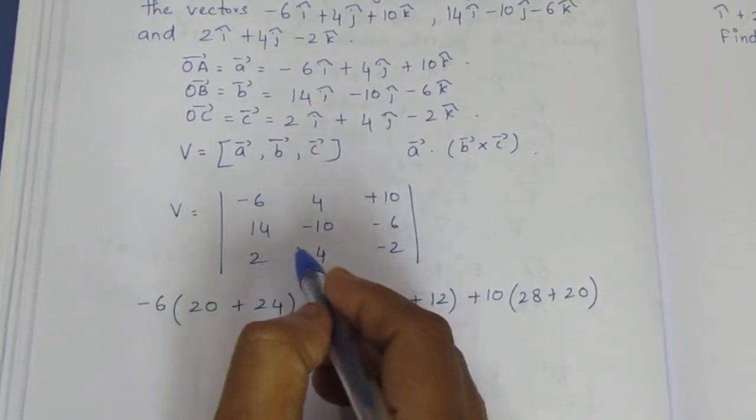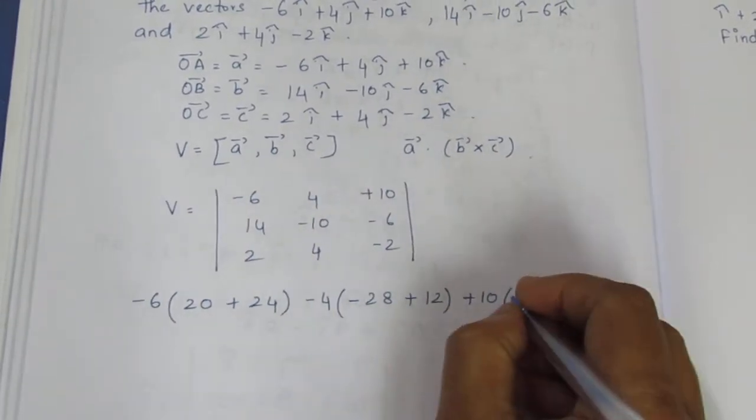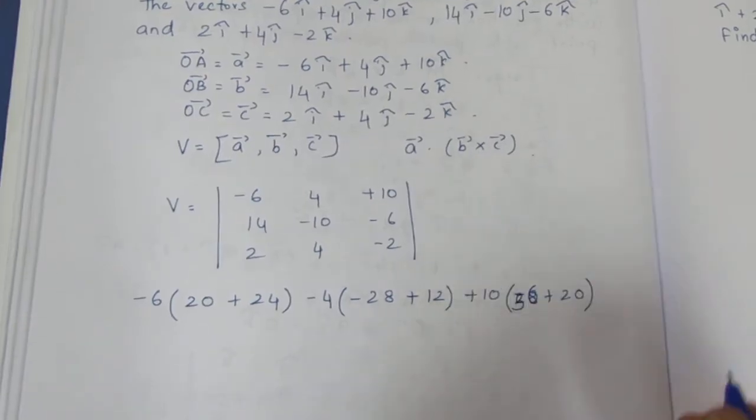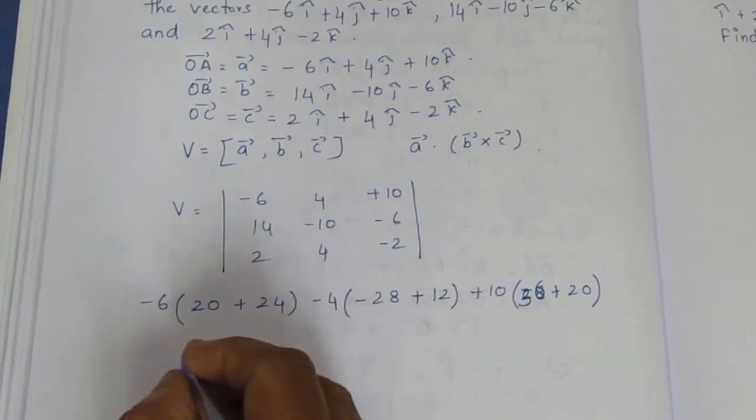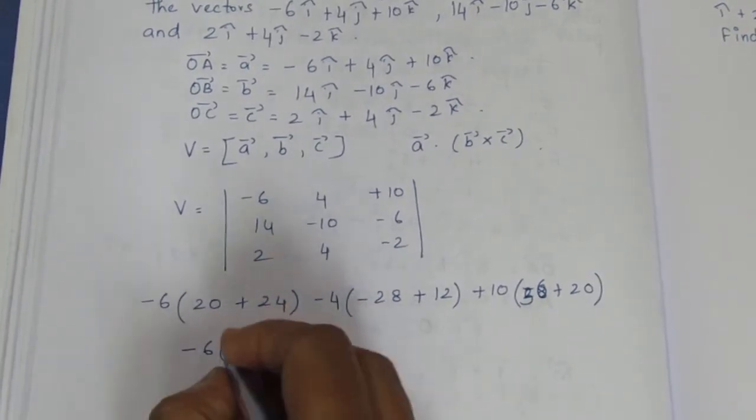Now we have to do it. This is one row number: 56 plus 20. If you solve, minus 6 times 44.